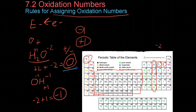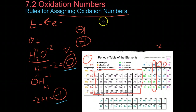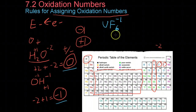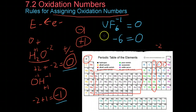Just as we can confirm neutrality or charge of a collection of atoms based on oxidation numbers, we can also determine oxidation numbers based on known charge. For example, in uranium hexafluoride, UF6, fluorine always has an oxidation number of -1, so the total charge on all fluorines is -6. Since this is a neutral molecule, the total must add up to 0. Therefore, uranium's oxidation number must be +6, so that the compound is neutral.